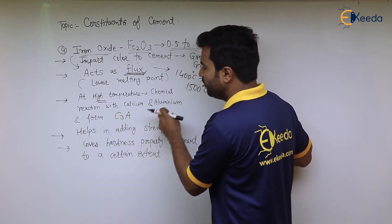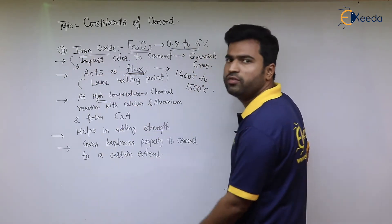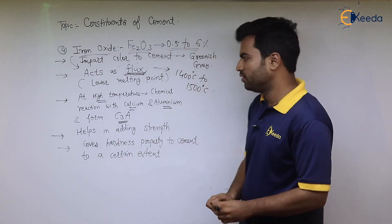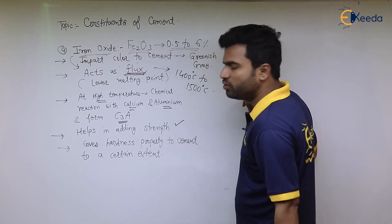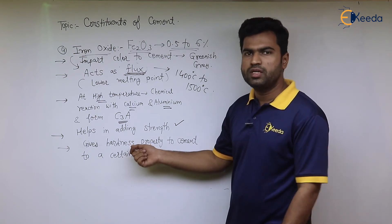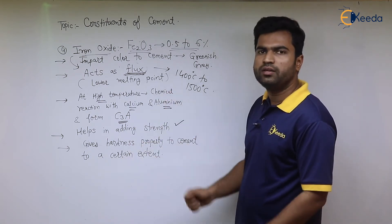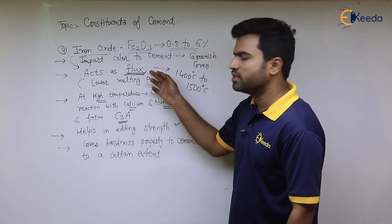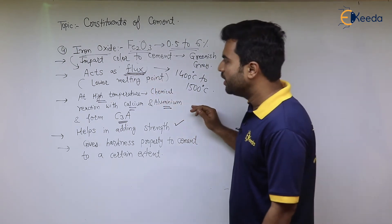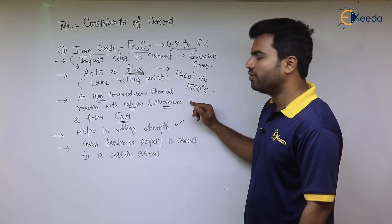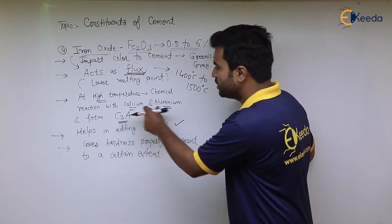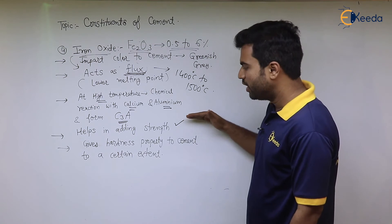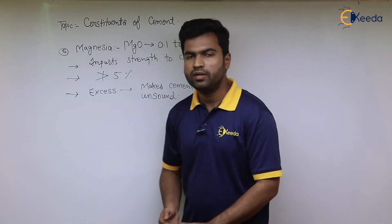At high temperatures, iron oxide undergoes a chemical reaction with calcium and aluminum to form tricalcium aluminate (C₃A). This helps in adding strength to the cement and also gives hardness, but only up to a certain extent. So the functions of iron oxide are: giving color to cement, acting as a flux by reducing melting point, forming C₃A, and contributing to strength and hardness.